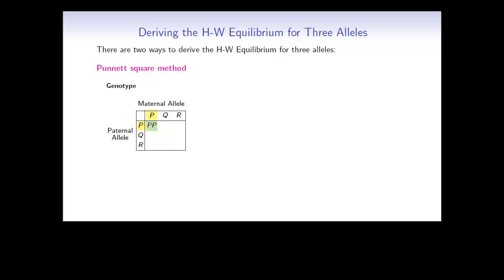For example, in the top corner we get P, P, and then P, Q, P, R. Here we get Q, P, which is really the same as P, Q, so normally we would write it in alphabetical order. And similarly we fill out all the other genotypes.